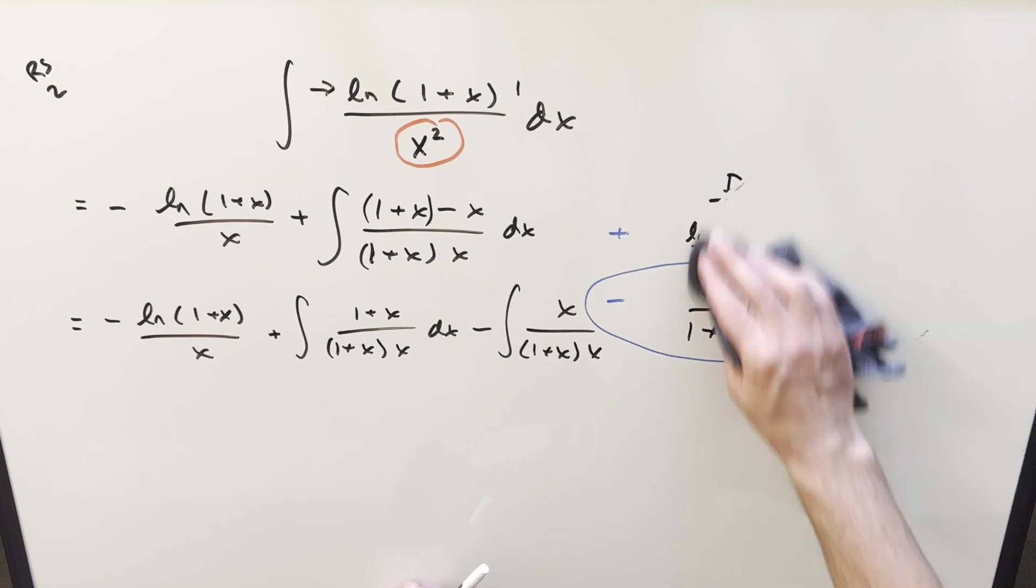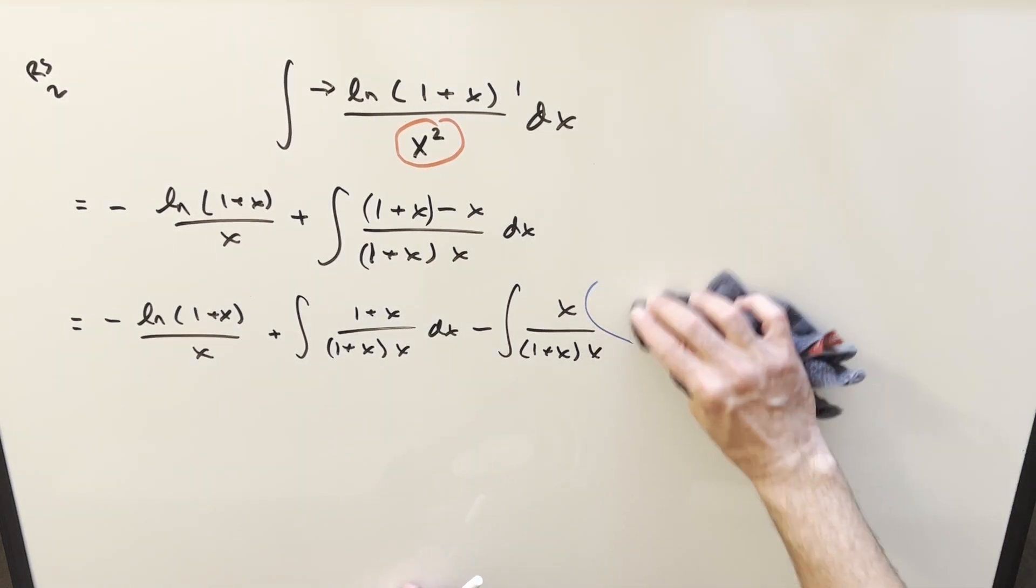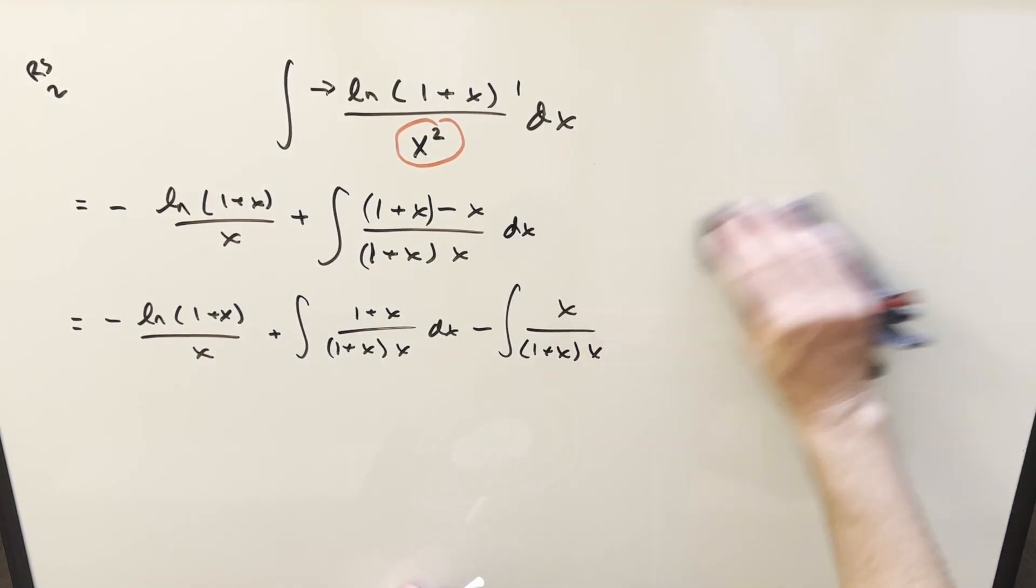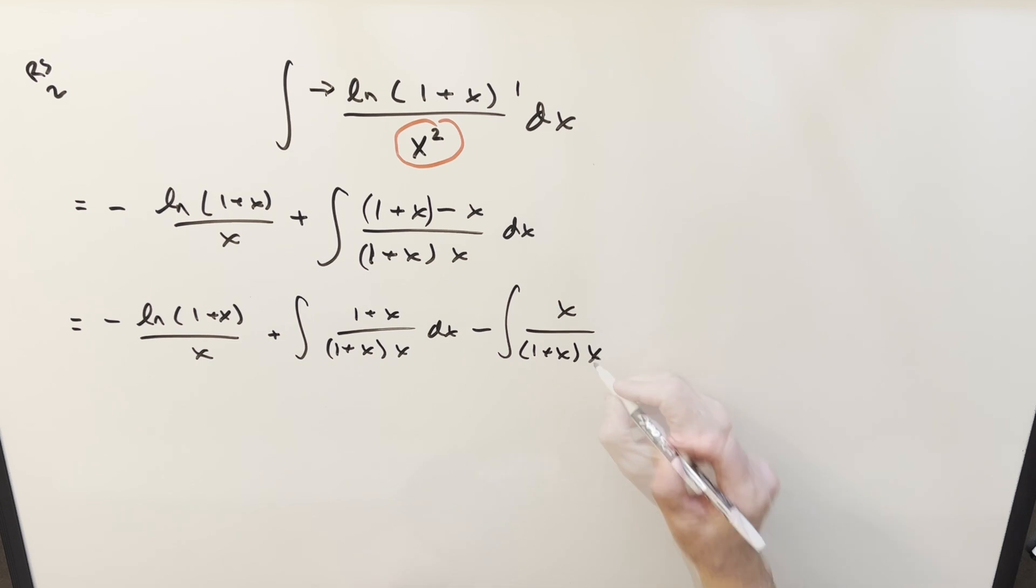I'll get rid of this because I don't think we need this anymore. We've already done our integration by parts. Don't forget a dx right here. But now at this point, we're going to get all kinds of cancellation because this is going to cancel with this. This is going to cancel with this. And now we're left here with just two easy integrals, just one in the numerator.